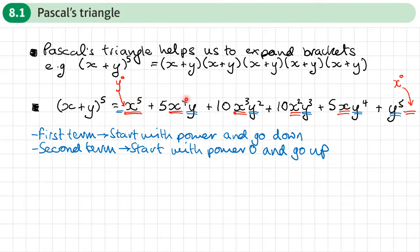That might be useful. Check: 5, 4 plus 1, 3 plus 2, 2 plus 3, 1 plus 4, 5 plus 0. Now the last thing we haven't looked at is where do these numbers come from? I've got one lot of the first term, five lots of the second term, 10 lots of this, 10 lots of this, five of this, and one lot of the last term. So the coefficients are 1, 5, 10, 10, 5, 1. This is where Pascal's triangle comes in.